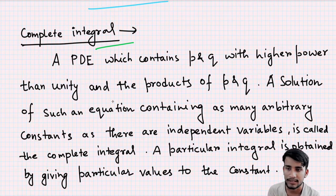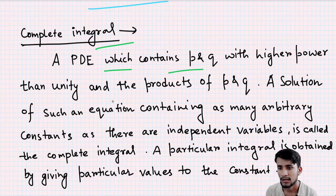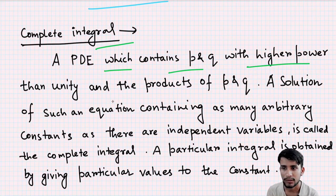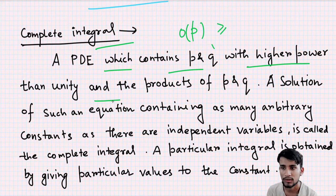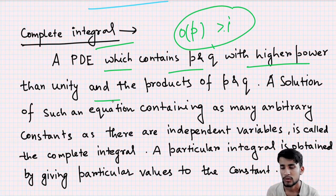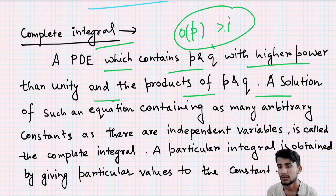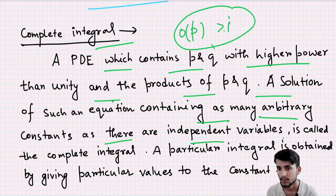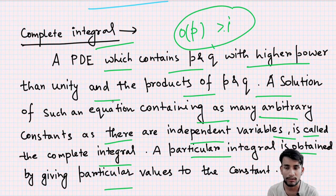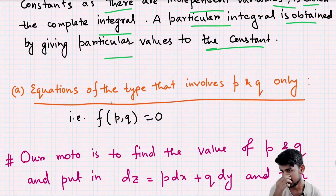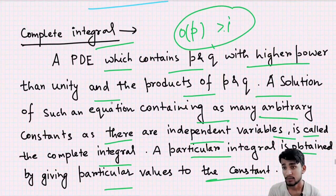First, let's see what is the complete integral. A complete integral is for a PDE which contains p and q with higher power than unity — that means the power of p and q must be greater than one, or the product of p and q. A solution of such an equation containing as many arbitrary constants as there are independent variables is called a complete integral. A particular integral is obtained by giving particular values to the constants.